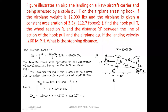Resolving along the horizontal axis (sigma Fx = 0): the left-hand side force is negative, so minus MA plus T cos 10° equals 0. From this you can find T is equal to 42,700 pounds.